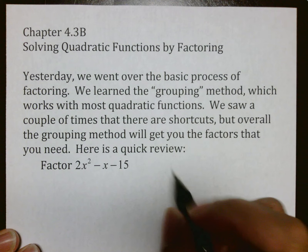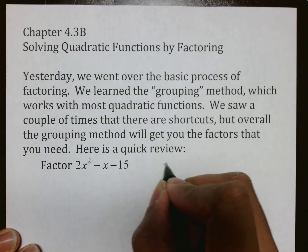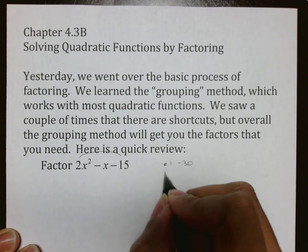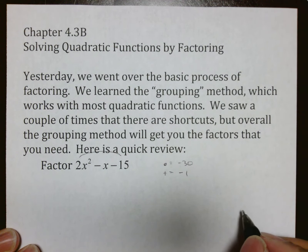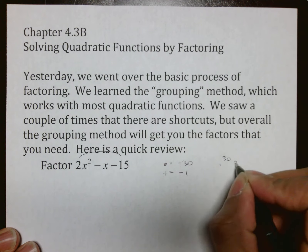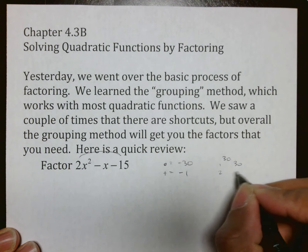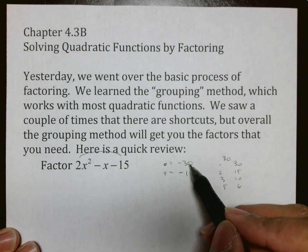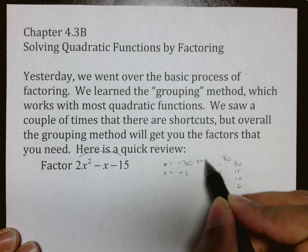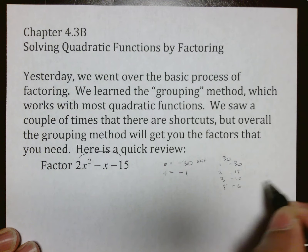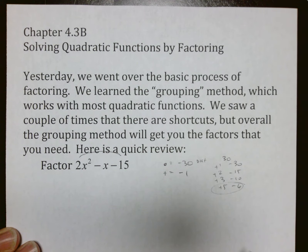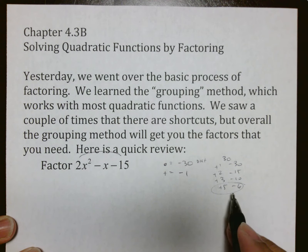Quick review. The first step was to translate into a combination by saying we're looking for numbers that multiply to be negative 30 and add to make negative 1. At that point, if you needed to make a factor tree, you could by doing 1×30, 2×15, 3×10, 5×6. The fact that it makes negative 30 means the signs are different. The fact that it's negative 1 means the big side is negative, so we found positive 5 and negative 6.